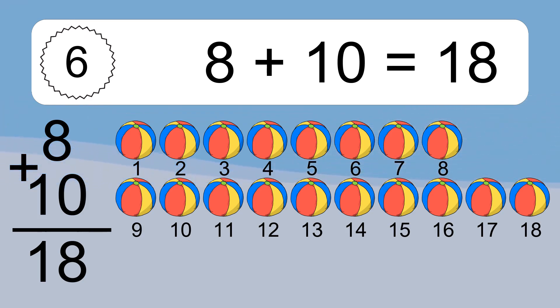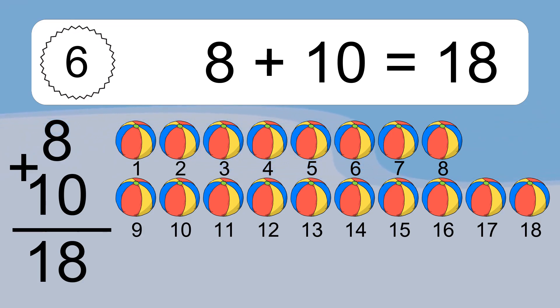8 plus 8 equals 16. Let's count it. 1, 2, 3, 4, 5, 6, 7, 8, 9, 10, 11, 12, 13, 14, 15, 16, 17, 18.